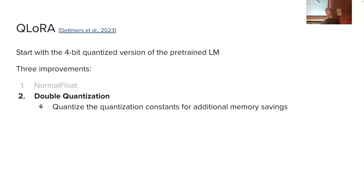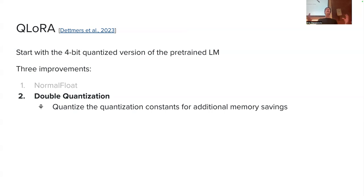QLoRA also introduces double quantization: since each block in block quantization has its own quantization scale or constant, and these constants accumulate across the many matrices in a transformer, QLoRA proposes also quantizing those quantization constants to save additional memory.